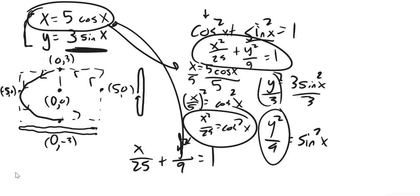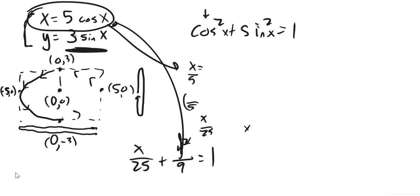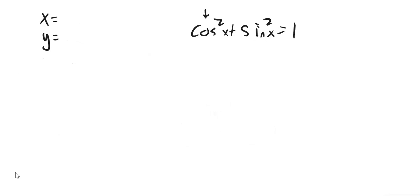Now, sometimes the graph doesn't use sine and cosine. So, let's say I have something like this. x equals 4 secant t, and y equals 6 tangent t. Well, I can't substitute it into this cosine squared plus sine squared, because I have a secant and a tangent. But, I can take advantage of the fact that I know that there are other Pythagorean relationships that I could use.